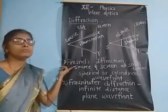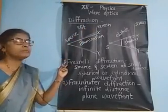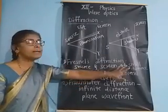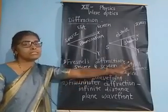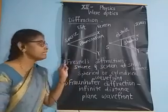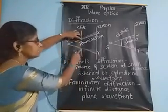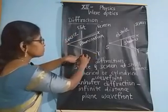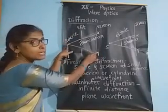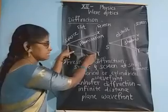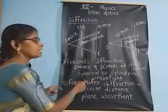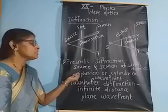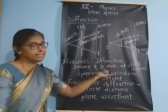There are two types of diffraction. The first one is Fresnel's diffraction. In this case, the source and screen are at a small or finite distance from the slit. In Fresnel's diffraction, the incident wavefront is spherical or cylindrical.